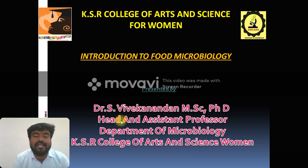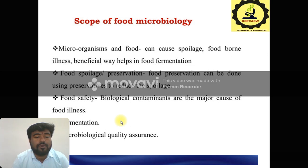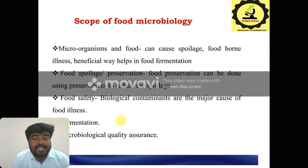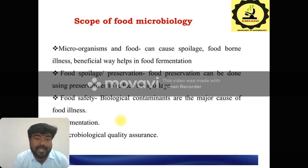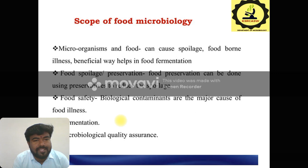What is the main introduction of our food microbiology? The main scope of food microbiology is that food can cause food spoilage, some foodborne illness, and sometimes in a beneficial way to help in food fermentation methods. Food spoilage or preservation can be done using some preservatives to reduce the spoilage.